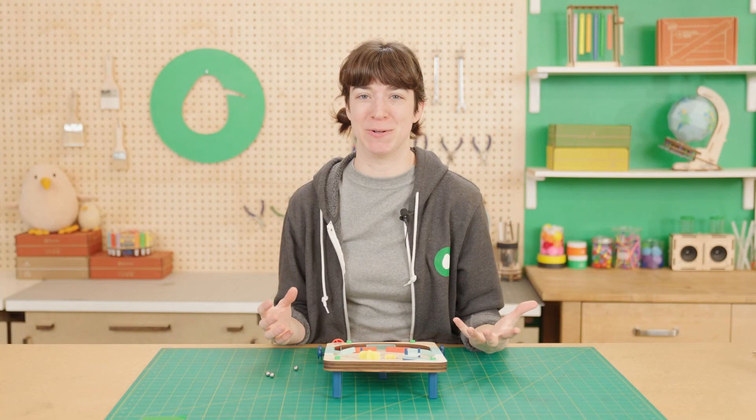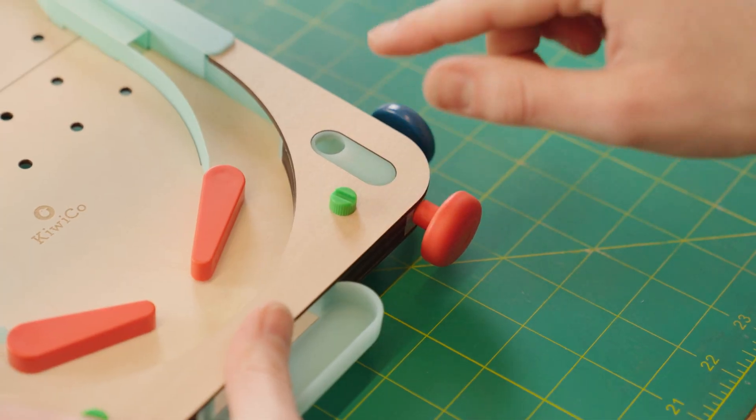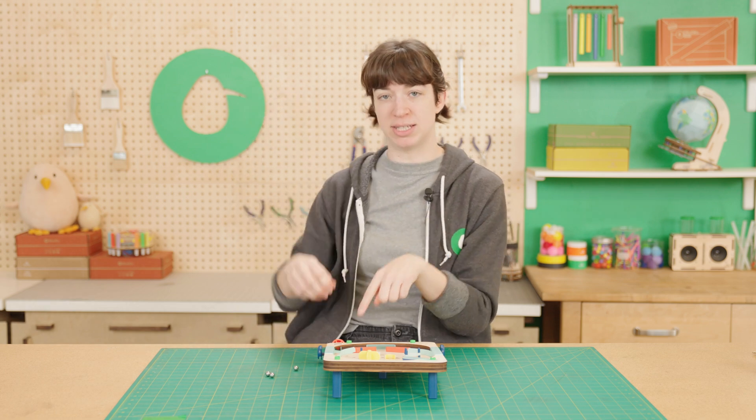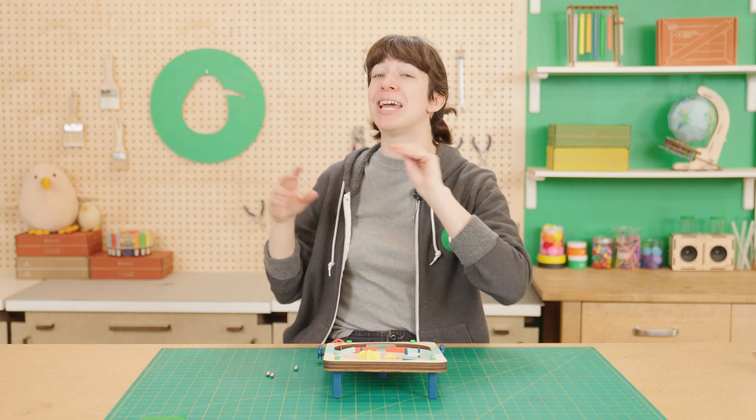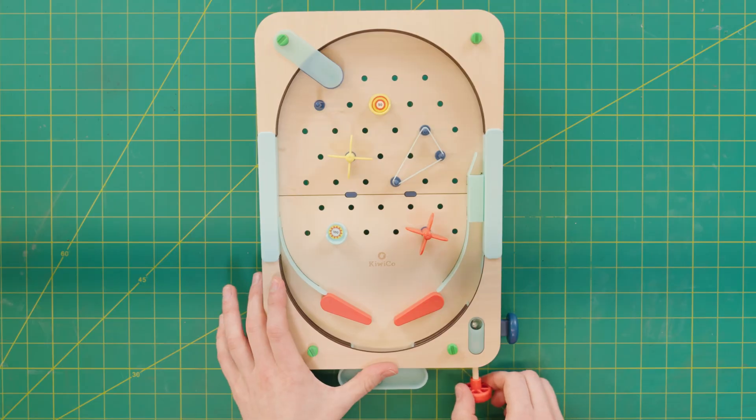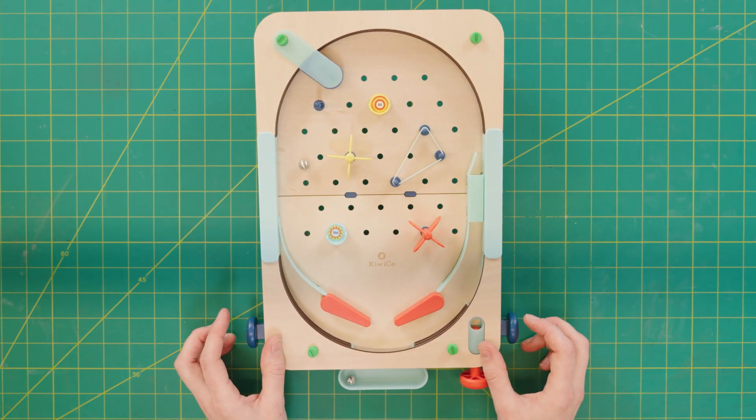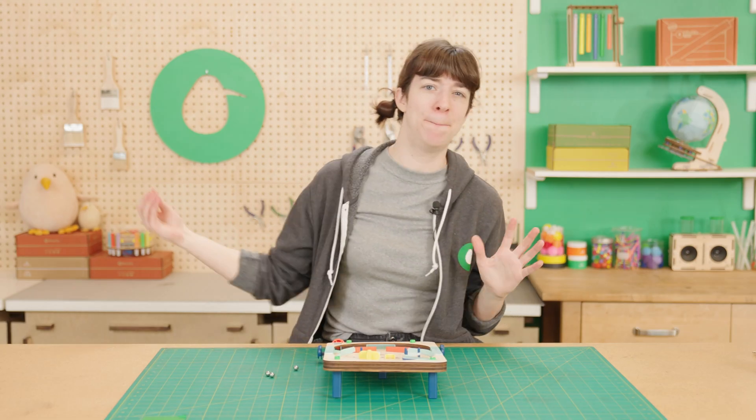So another really cool science principle that goes into how pinball machines work is something called energy. But there's two kinds of energy actually at play here. One is potential and one is kinetic. So when you pull back your plunger, you're actually storing a bunch of energy from your muscles into the spring. And then that spring has a bunch of potential energy. It's not doing anything yet, but it's about to. And when you let go of the spring, it unleashes all at once and turns that into kinetic energy or energy in motion as the ball flies out onto the field and rolls around.